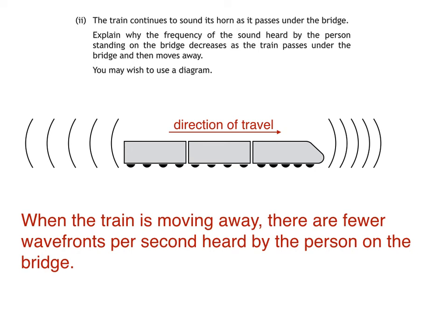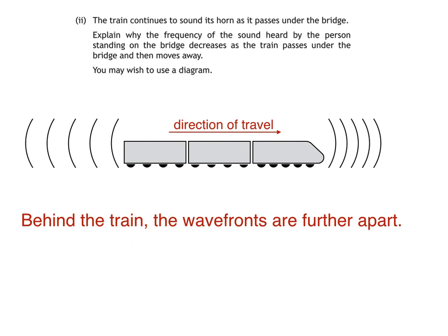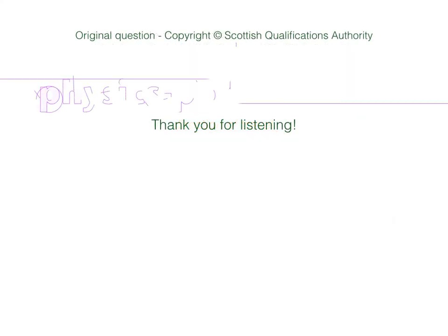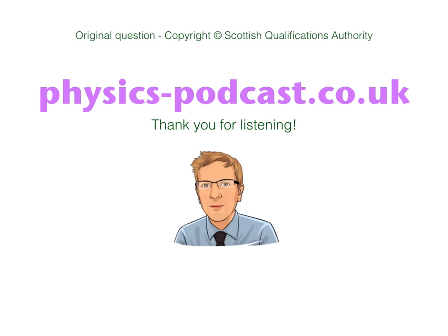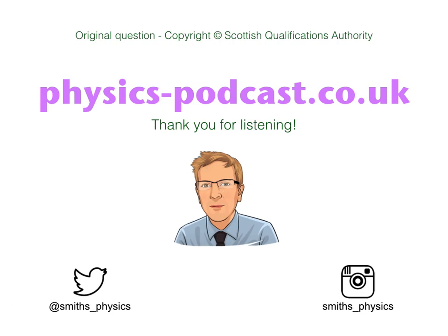We could also say: behind the train, the wavefronts are further apart. Together with our diagram, this would be enough to get the marks. For more information on upcoming videos, summary sheets, and so on, visit physics-podcast.co.uk. Thank you for listening.